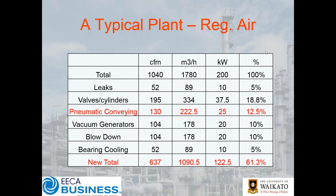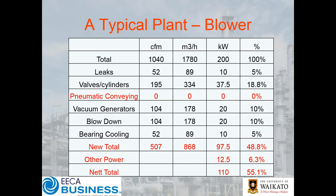Going back to our typical plant: assuming we've just regulated the air down, our pneumatic conveying has dropped in half and we're now down to 61% overall. Alternatively, if we throw a blower in, pneumatic conveying in terms of compressed air drops to zero. We've introduced replacement other power — our blower system — displacing 12.5% with only 6.25%, and even with the extra blower we're sitting at 55%. Substantial savings are starting to stack up.